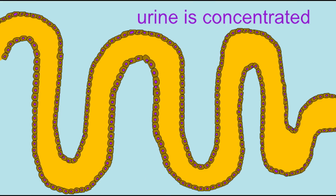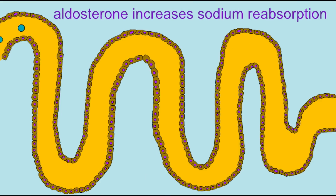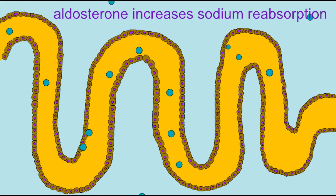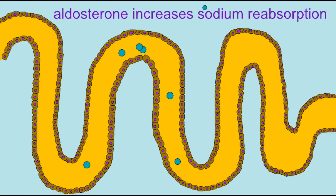The adrenal medulla is stimulated into making the hormone aldosterone, which causes renal tubules to reabsorb more sodium chloride, which then causes additional reabsorption of water, thus increasing blood volume and pressure.